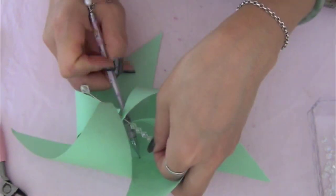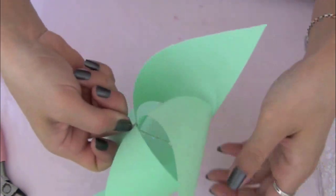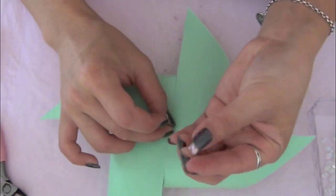I mark the center of the paper. That is where I poke the pin. Be sure to poke the pin all the way through. Turn the pinwheel over and insert a bead.